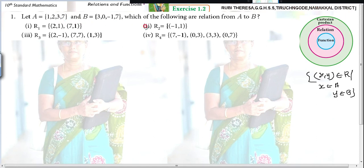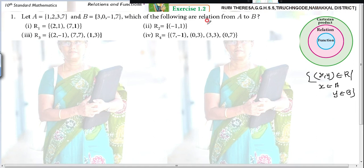R1 is not a subset of A cross B. Just by seeing we will be able to answer. Similarly, minus 1 is not an element of A, so it is not an element of A cross B, so it is not a relation.